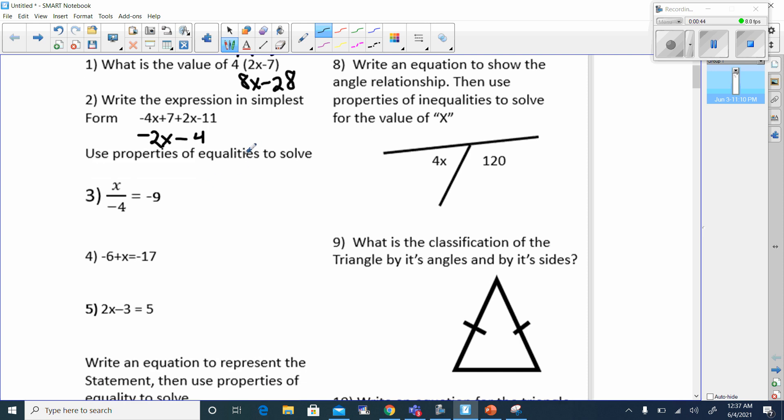Next, use the properties of inequalities to solve this. Since I'm dividing by negative 4, I'm going to multiply by negative 4. Whatever I multiply to one side, I multiply to the other side. So x is going to equal, negative times negative is positive, 9 times 4 is 36.